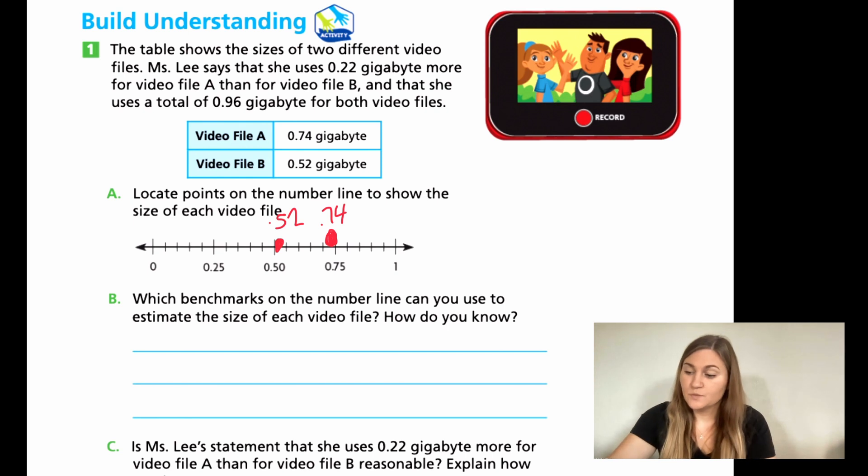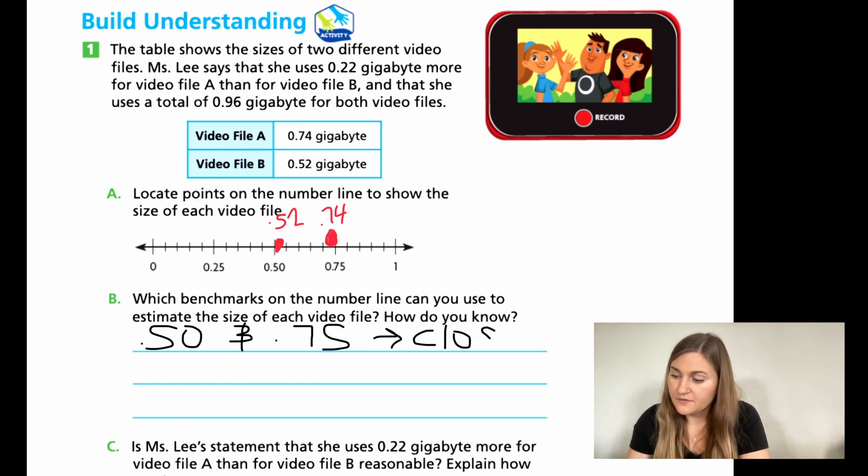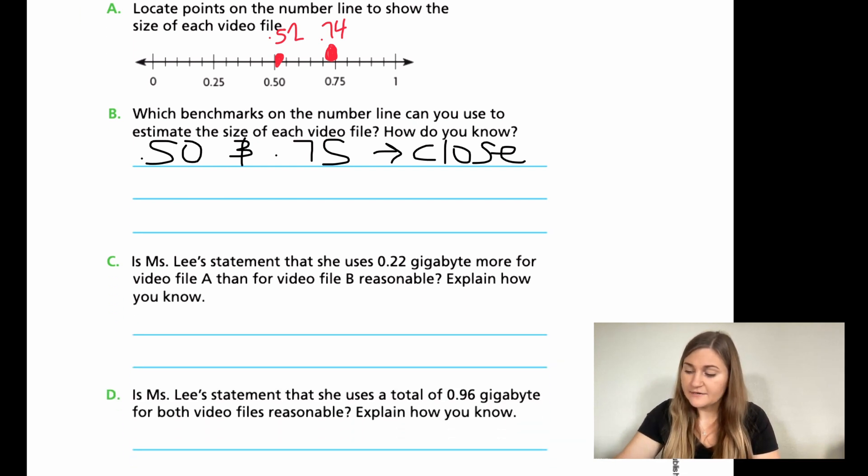All right, now it says which benchmarks on the number line can you use to estimate? Well, I'm going to use that 0.50 and that 0.75 since they're right next to each other and they're my benchmarks. So for this, I'm just putting 0.50 and 0.75. How do you know? Because they're close to them. You can write more than that if you want to, but I think this shows understanding if you just say that they're close.